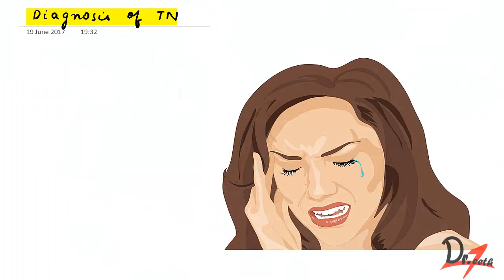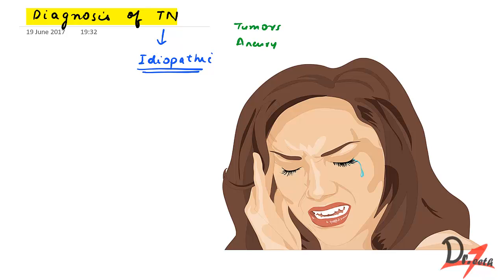Let's study about the diagnosis of trigeminal neuralgia. Trigeminal neuralgia, as studied in previous videos, is an idiopathic condition — the exact cause is not known. However, various views have been put forward, such as it could be due to tumors or aneurysms of the artery associated with the nerve. Because there is no clear-cut technique to confirm TN, diagnosis mainly depends on the patient's history.